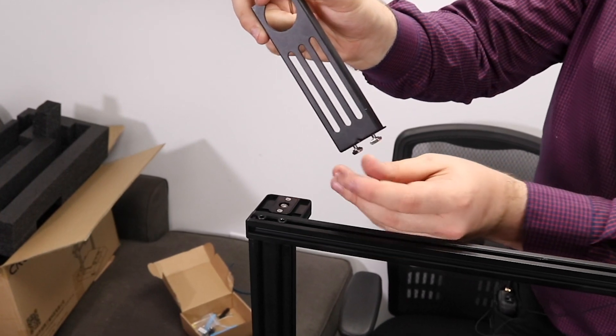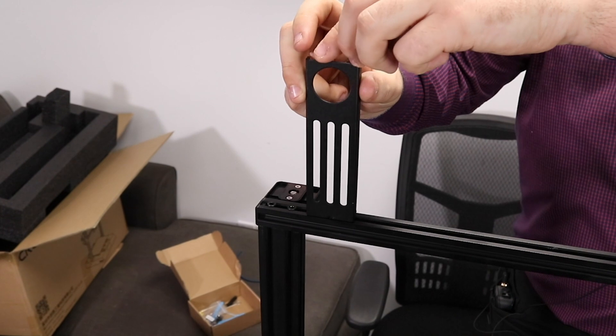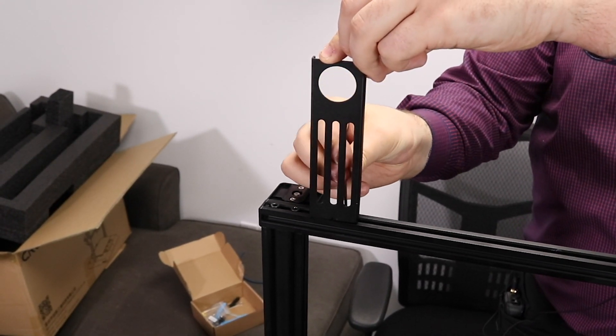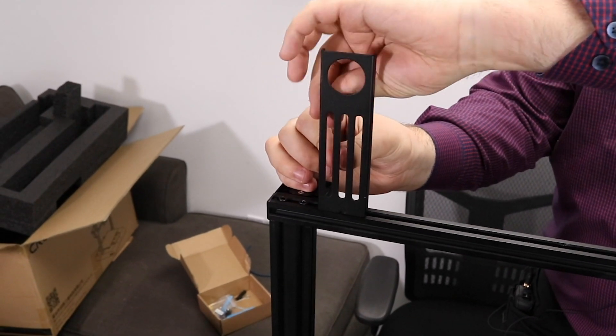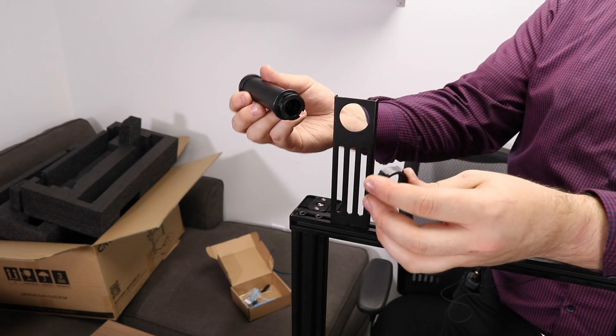On top of the printer, align the T-nuts with the channel of the V-slot and then insert it in. Take your Allen key and turn until the T-nuts catch and hold the spool holder in place. Next, mount your spool holder using the nut.